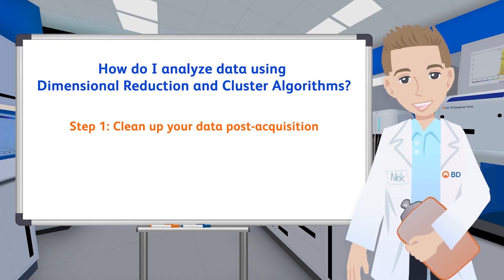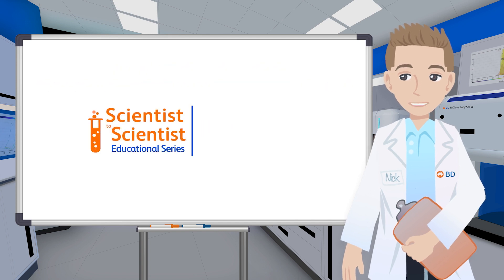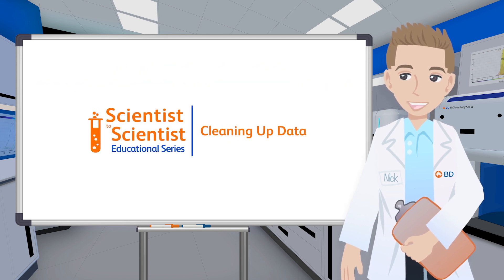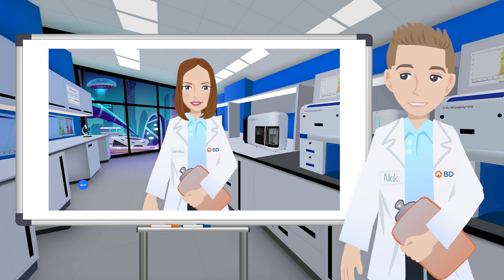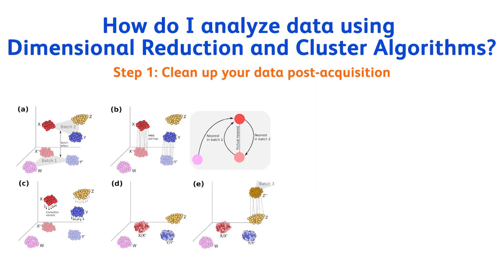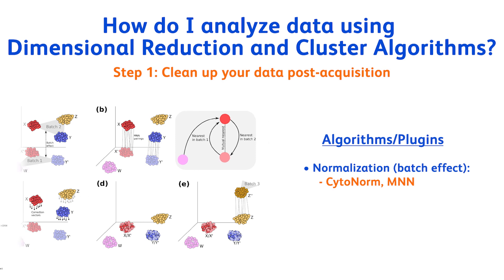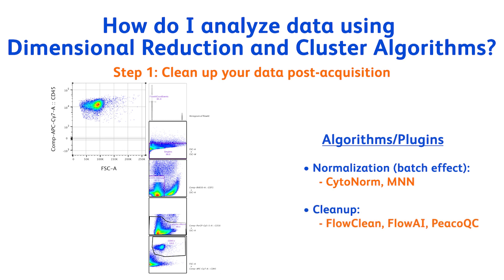The first step is to clean up your data post-acquisition. For more information on this crucial step, please refer to the 'Cleaning Up Your Data' video in this series. This step will remove batch effects and all unwanted events from your sample — clogs, debris, dead cells. You could even select a specific cell type, for example CD45-positive cells, if your research is focusing on a local site.